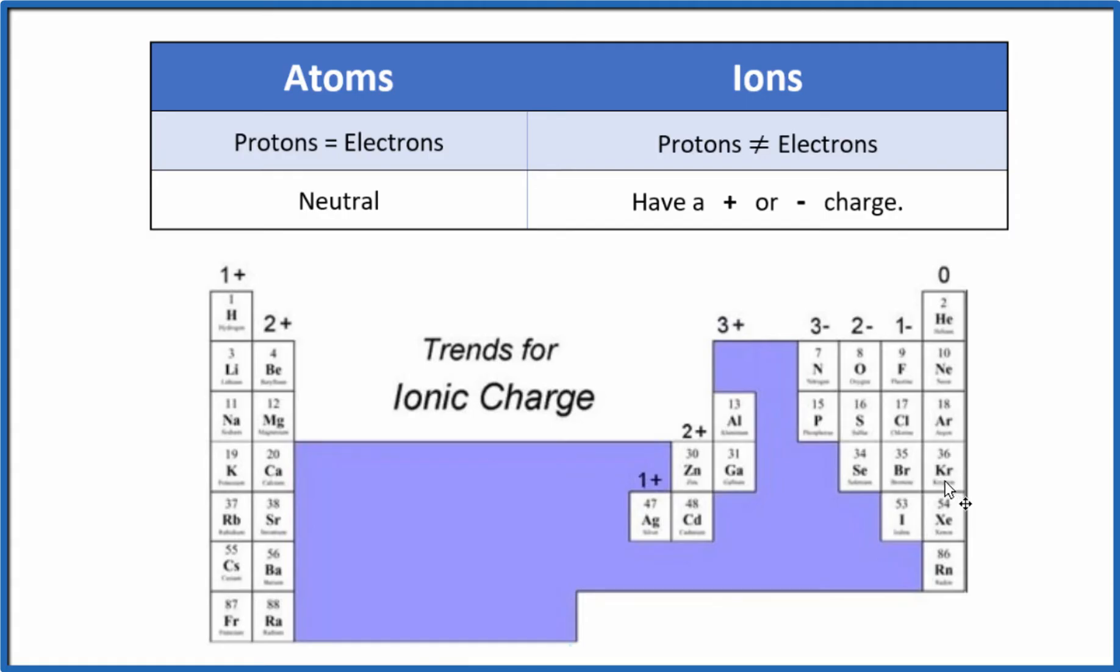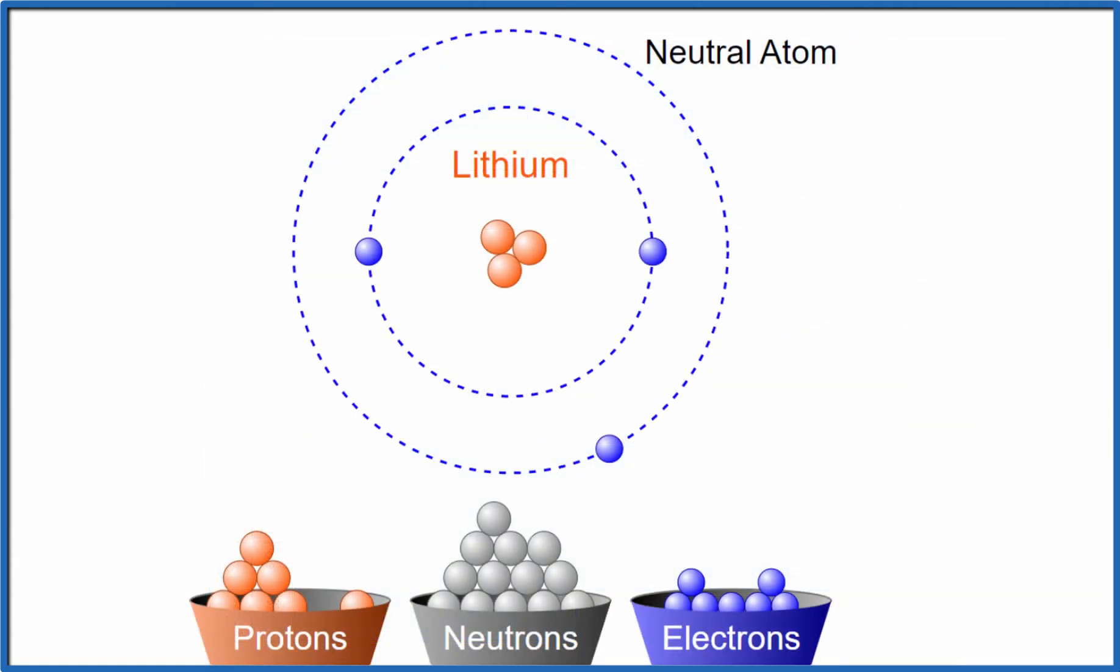Let's take a look at an atom becoming an ion. So here we have lithium from the periodic table, and it's a neutral atom. 1, 2, 3 of these protons down here, and 1, 2, 3 electrons. So it's neutral.